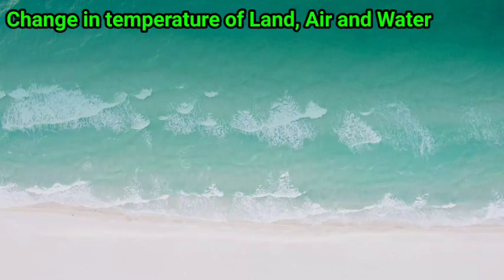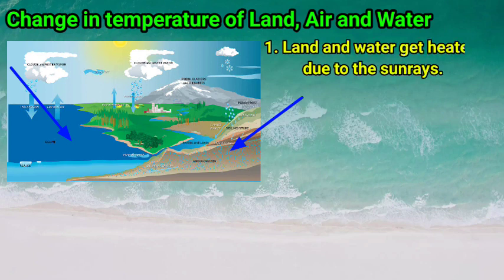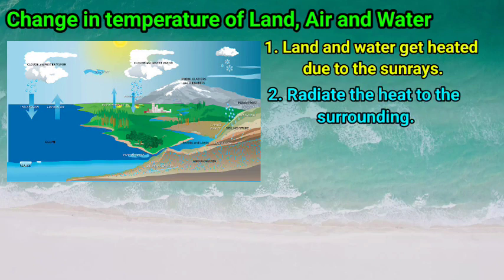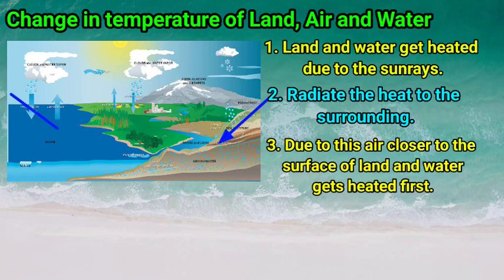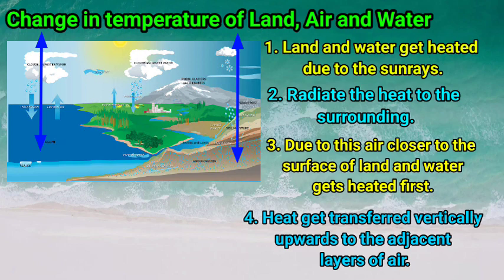Let's see how temperature changes in land, air, and water. Land and water get heated, and later both land and water radiate the heat they have absorbed to the surroundings. Due to this, the air closer to the surface of land and water gets heated first, and later this heat gets transferred vertically upward to adjacent layers of air. Hence, the layer of air near the land and water surface is hotter, and the temperature of air goes on decreasing as we move upward. Due to this, temperature near sea level is higher and decreases in mountain regions.